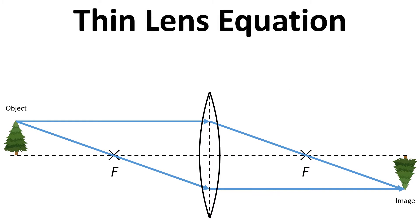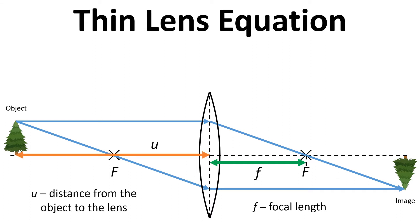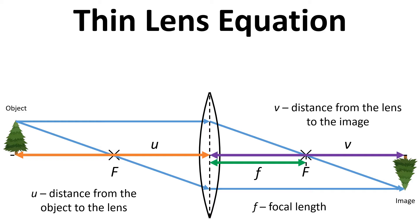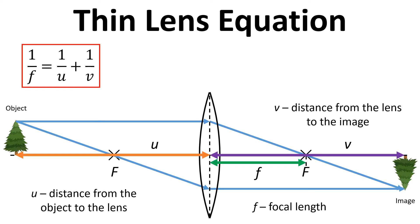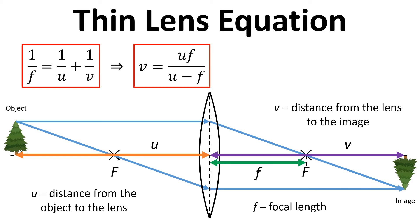Based on the thin lens approximation we can use the thin lens equation. We have f as the distance from the centre of the lens to the focal point, u as the distance from the object to the lens, and v as the distance from the lens to the image. The thin lens equation is: 1 over f equals 1 over u plus 1 over v. We can rearrange this to get v equals uf divided by u minus f.